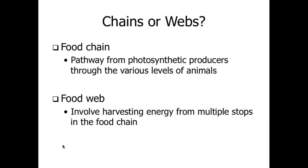There are different ways to graphically depict this flow of energy. One is a food chain, which is a pathway from the primary producers through the various energy levels — one potential pathway for the energy to follow. A food web is more involved, showing multiple potential paths in which that energy can flow, rather than limiting itself to just one chain.